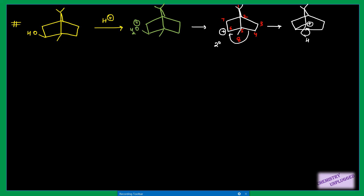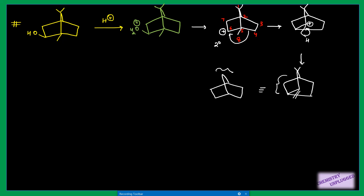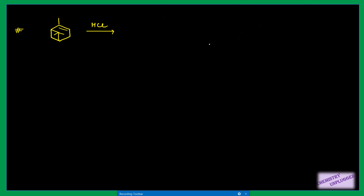Next, this bond shifts and we get a double bond at this position. Another way of writing this molecule is to write this portion as a bridge. These two carbons become like this. The methyl groups come here, and this is your double bond — this is your final product, again via Wagner-Meerwein rearrangement.